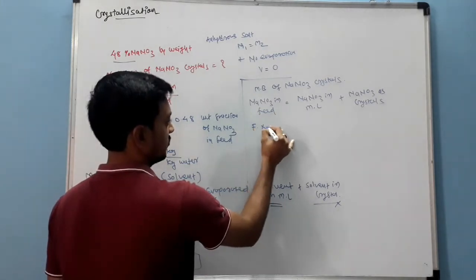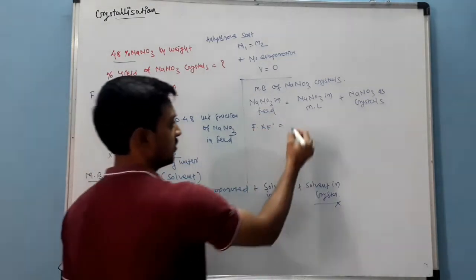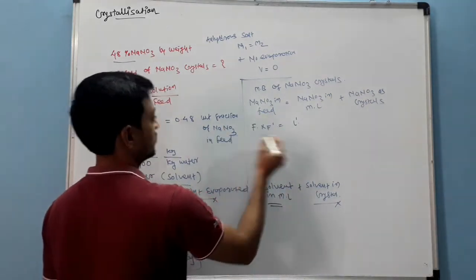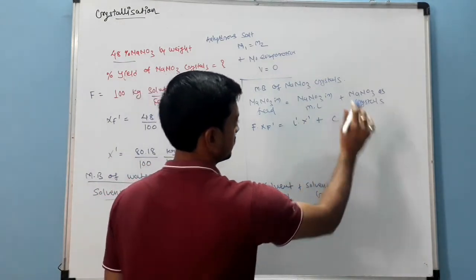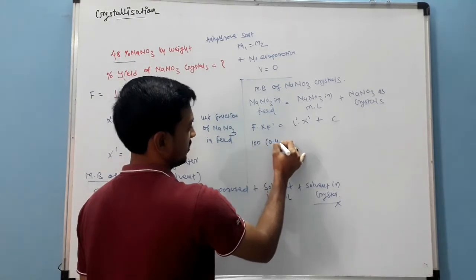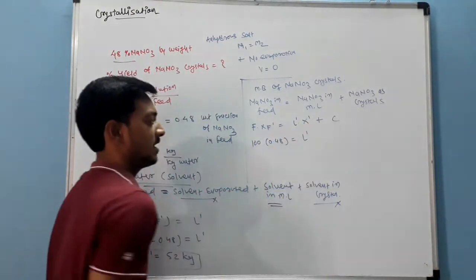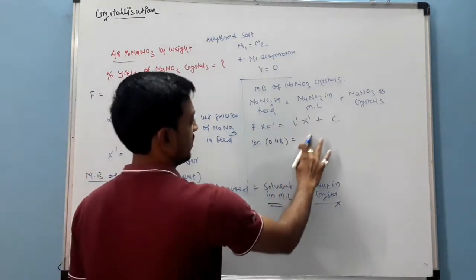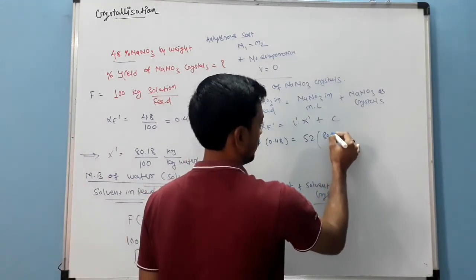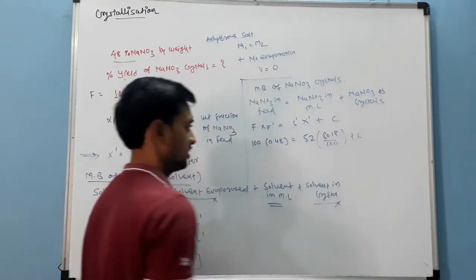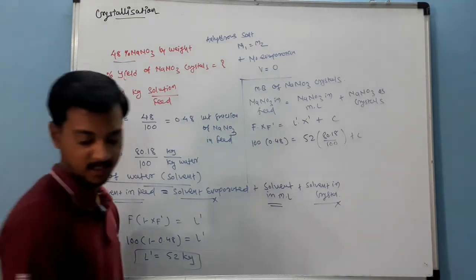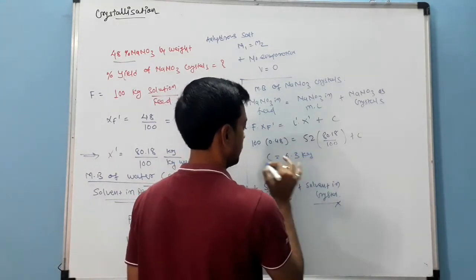So NaNO3 in feed F into XF dash, NaNO3 in mother liquor L dash times solubility X dash plus NaNO3 as crystals C. Now put the value of F 100, XF 0.48, L dash 52, X dash 80.18 divided by 100 plus C. By solving this, we got the answer is 6.3 kg. C is equal to 6.3 kg, this is the yield of crystals.